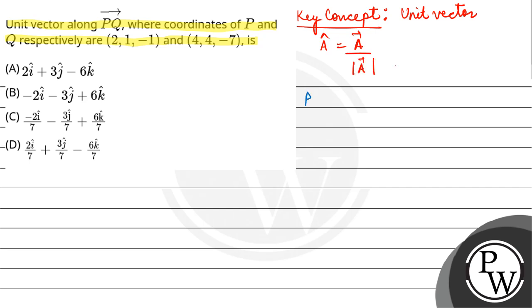Now here we have P coordinates given as (2, 1, -1) and Q coordinates given as (4, 4, -7).